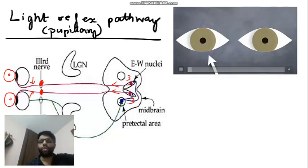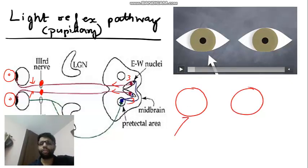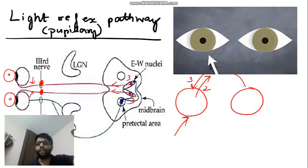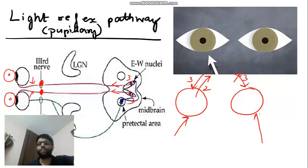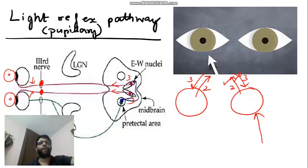In the question: light was shown to the right eye and right was constricting — meaning afferent is okay in the right eye and efferent is okay — so right second nerve and right third nerve are fine. Left doesn't constrict, so left third nerve efferent is having a problem. To confirm: throwing light in the left eye, left was not constricting but right was constricting, meaning the left second nerve was functioning well. So it is confirmed that left third nerve palsy is the answer.